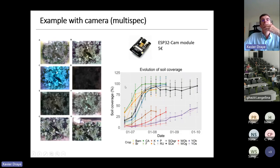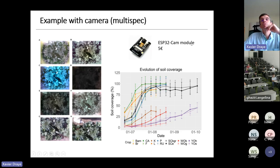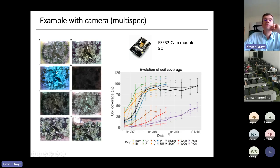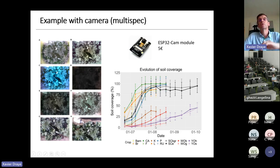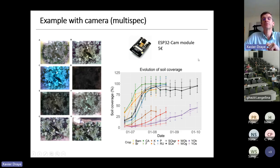A set of sensors developed in the framework of a PhD thesis was a multispectral camera with eight ESP32-CAM modules. Each module is an ESP32 plus a two-megapixel camera costing around five euros. Using that, we were able during the thesis to develop a sensor deployed in the field that provided what we needed to estimate soil coverage over time for different crops in a market gardening study. Given the difference we wanted to see, it was sufficient in terms of accuracy.